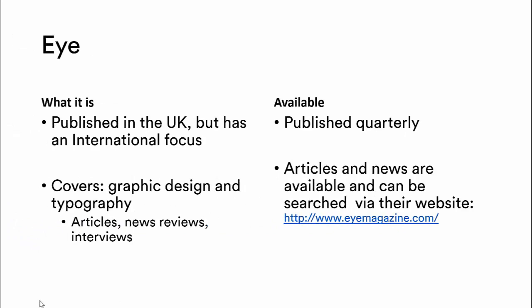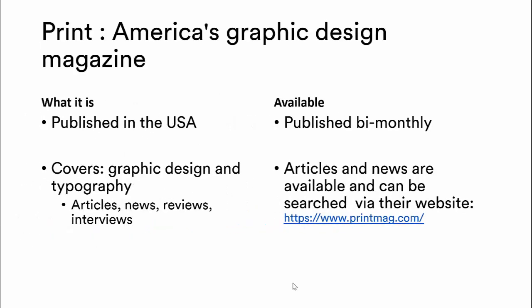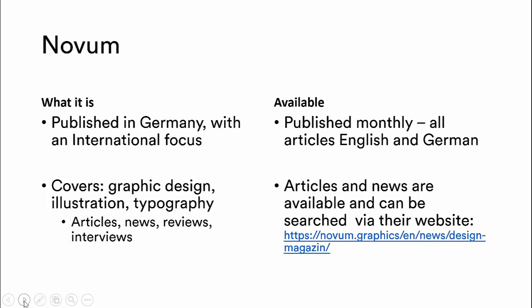iJournal is published in the UK but also looks at what's going on elsewhere in the world. It covers graphic design and typography, with lots of articles on issues in design, news, reviews and interviews with successful designers. It's published quarterly, but they have more up-to-date material on their website. Print is an American graphic design magazine, so it has more of an American focus but is also very useful. It's published bi-monthly and has lots of additional information on their website. Novum is a graphic design magazine covering graphic design, illustration and typography, published in Germany but with an international focus, with articles and news updated on their website.